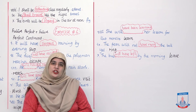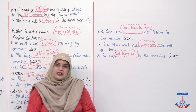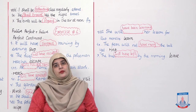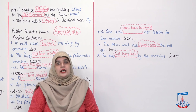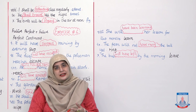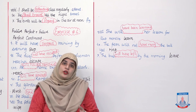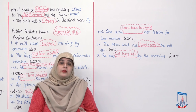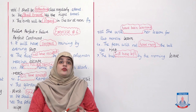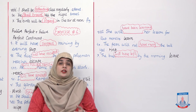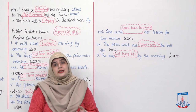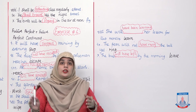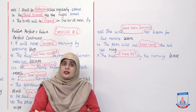Quick recapitulation of today's lesson. Aaj hamne correct form of verb ki correct usage ki Exercises 4, 5, and 6 ki saath. Exercise 4 thi past perfect aur past perfect continuous ke baare mein. Exercise 5 thi future indefinite aur future continuous. Exercise 6 thi future perfect aur future perfect continuous. We did all the exercises — it's very easy, not very difficult.